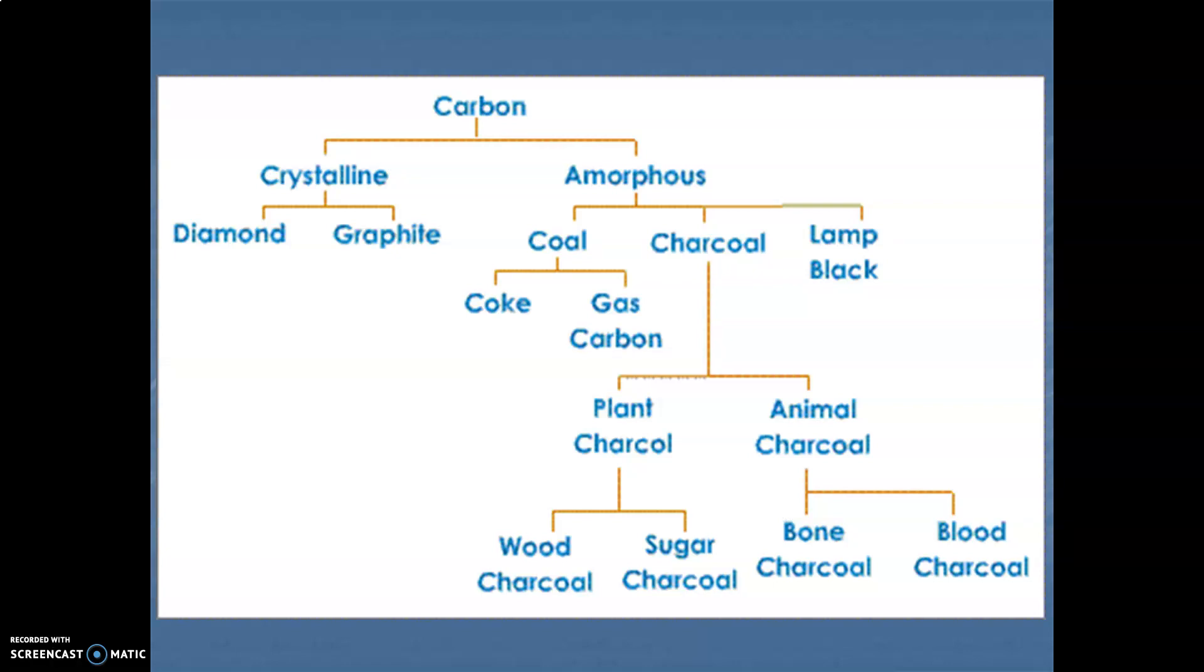Carbon occurs on the earth crust in both free state as well as combined state. Free state occurs as coal, diamond and graphite. When we talk about combined state, carbon when reacts with other gases forms like hydrocarbons - a mixture of hydrogen and carbon - and carbon dioxide, which is oxygen and carbon together in a combined state.